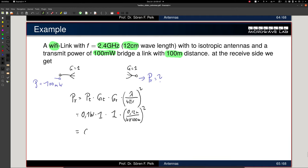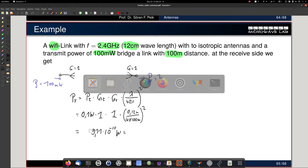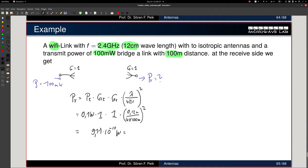So this becomes 0.911 10 to the minus 10 watts, which is 9.919 10 to the minus 10. So this becomes 0.911 nanowatt. So that's my receive power. And that's still enough to have the Wi-Fi link operating.